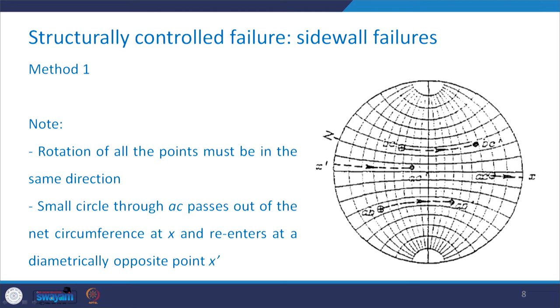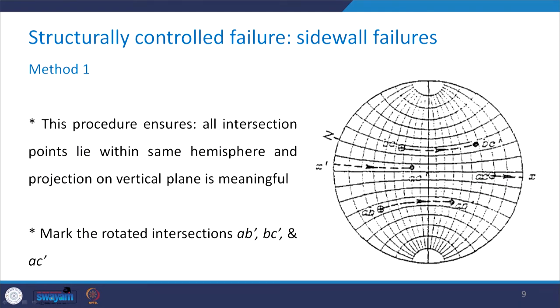Rotation of all points must be in the same direction. The small circle through A,C passes out of the stereo net circumference after about 20 degrees and then enters diagonally. This procedure ensures all intersection points lie within the same hemisphere so that the projection onto the vertical plane is meaningful; if they were in different hemispheres, the wedge shape could not be determined.